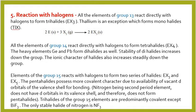The pentahalides possess more covalent character due to the availability of vacant d orbitals in the valence shell for bonding. Nitrogen, being in the second period, does not have any d orbital in its valence shell, so nitrogen does not form any pentahalide. Trihalides of group 15 elements are predominantly covalent except BiF3 (bismuth trifluoride). The only stable halide of nitrogen is nitrogen trifluoride (NF3).